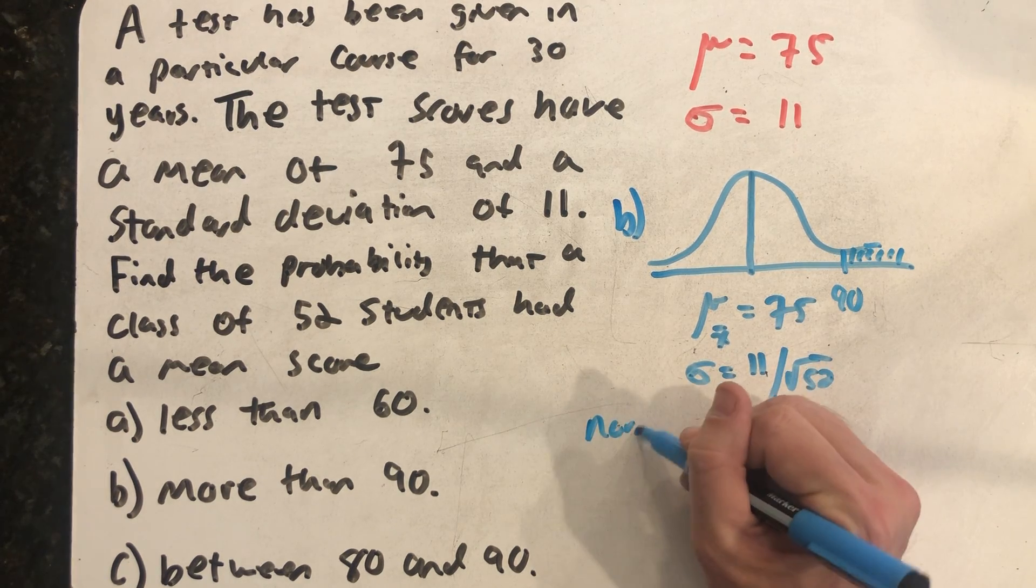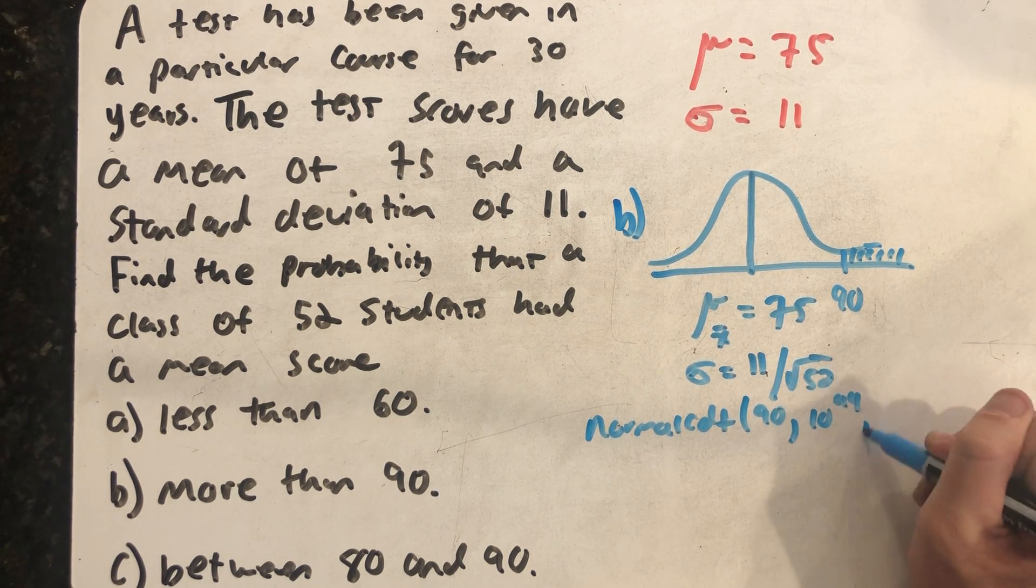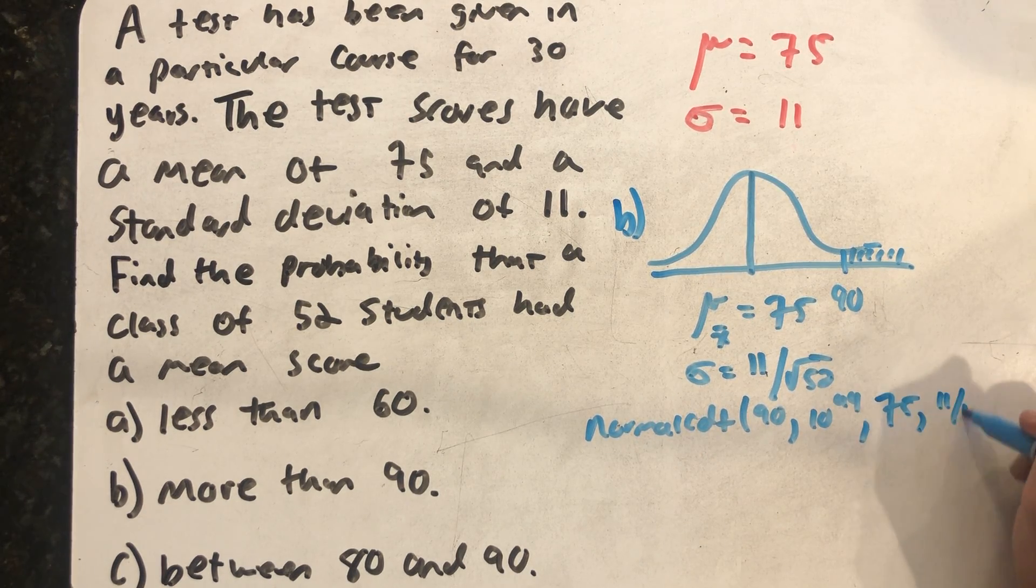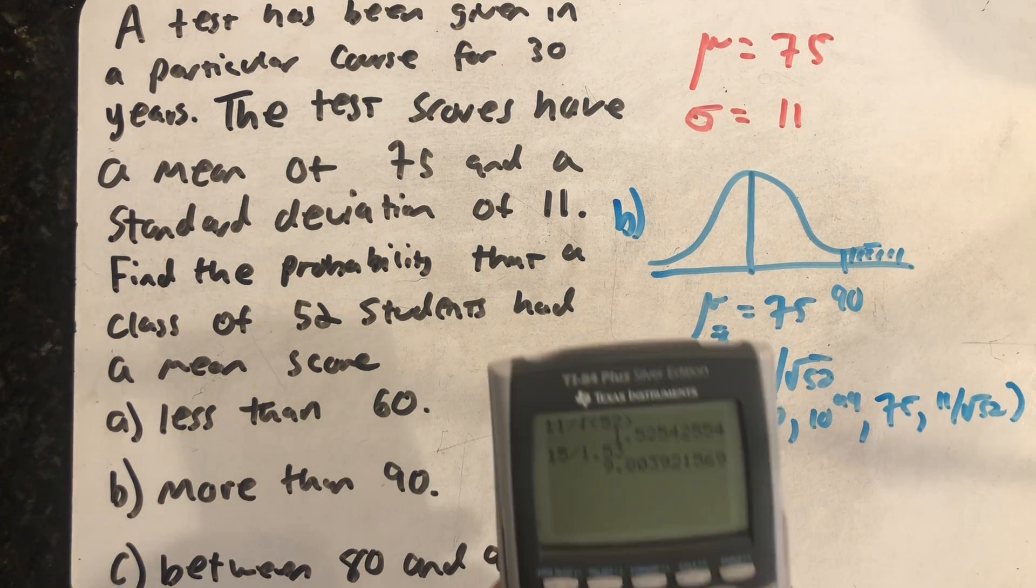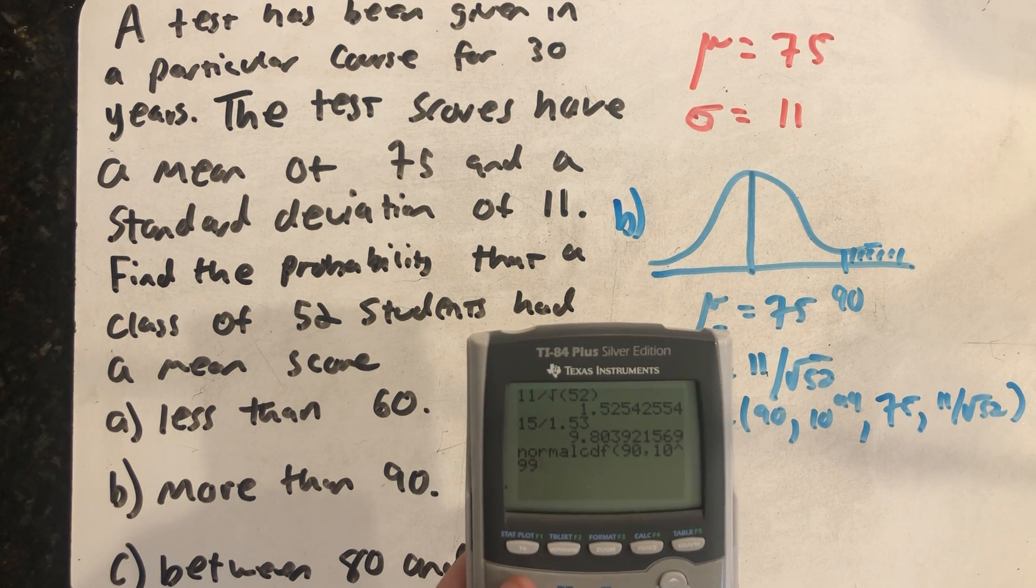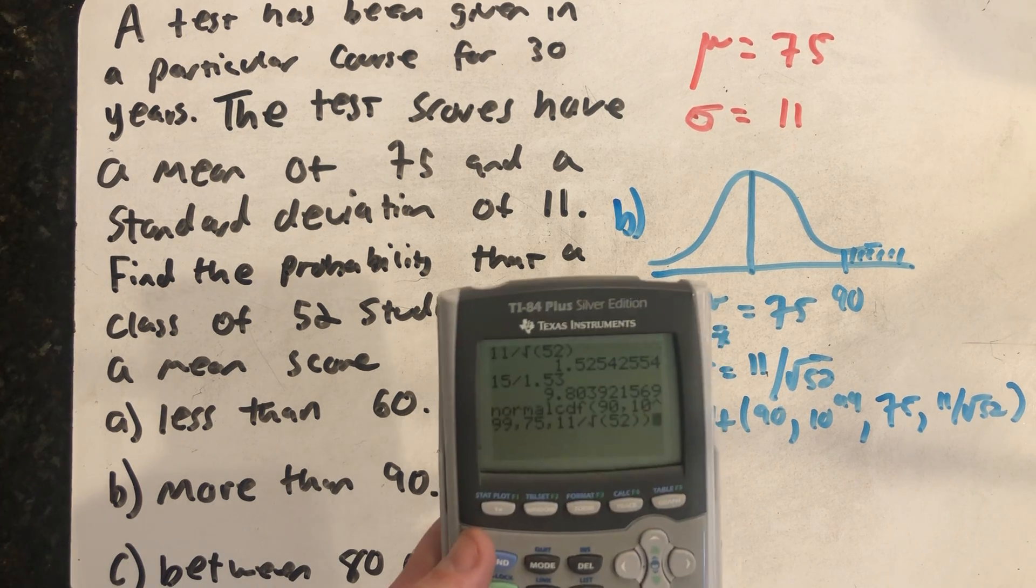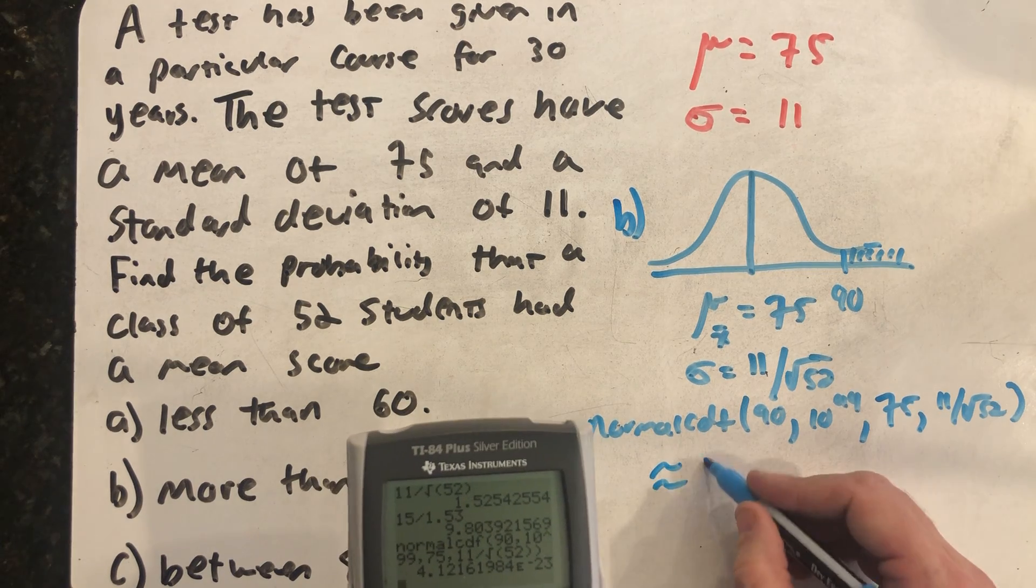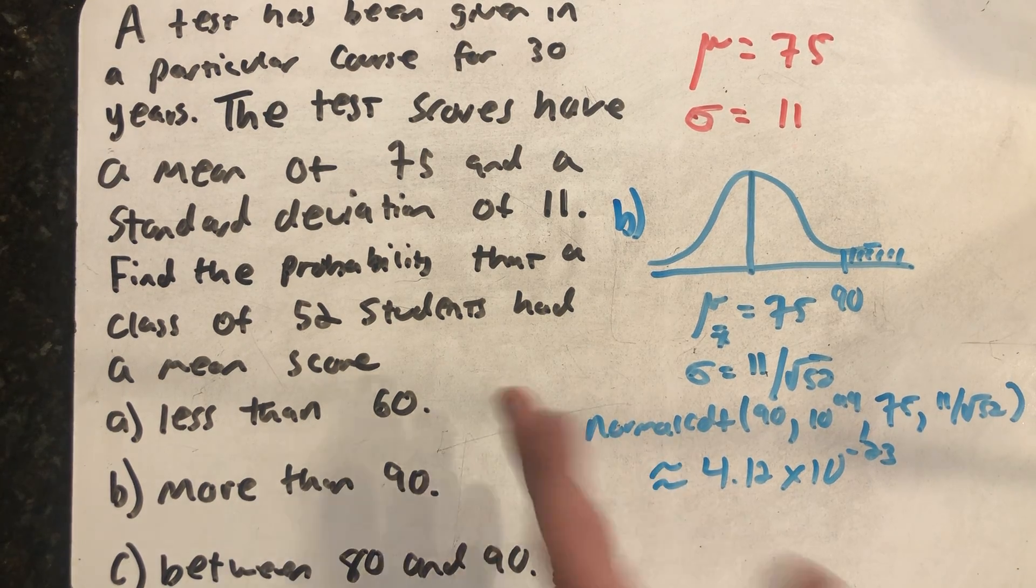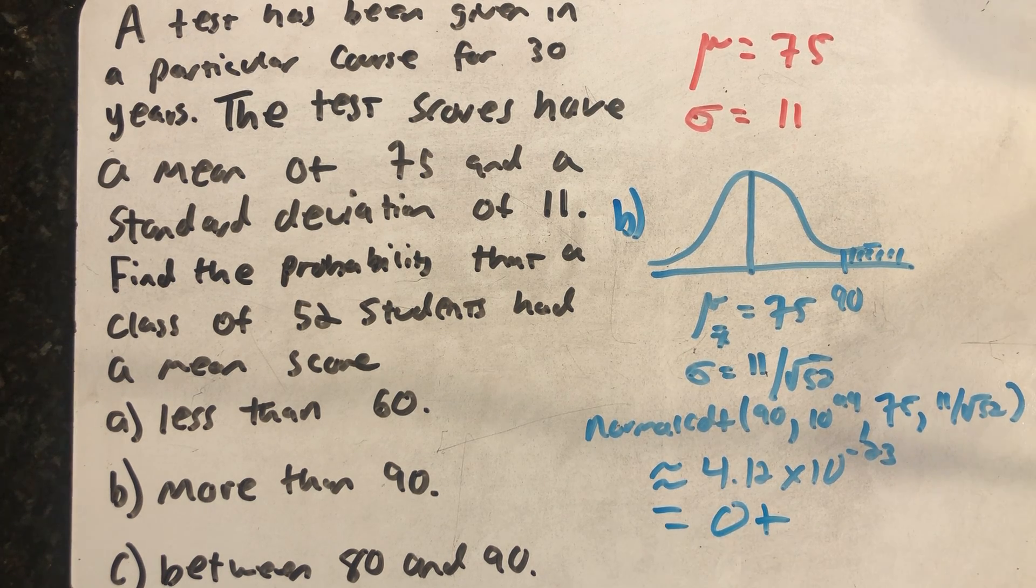We'll be using normal CDF again. 90 as a left-hand endpoint, 10 to the 99th as a right-hand endpoint, pretending that I'm shading forever, the mean, and a standard deviation. And this time I get 4.12 times 10 to the minus 23rd. The calculator can calculate this one's not rounding it to zero, but well, to any amount of reasonable rounding, that's still a zero plus.